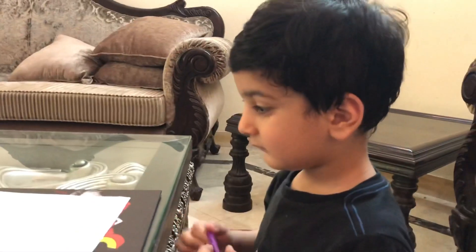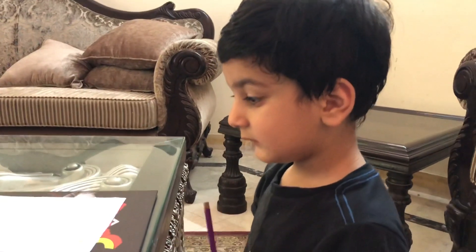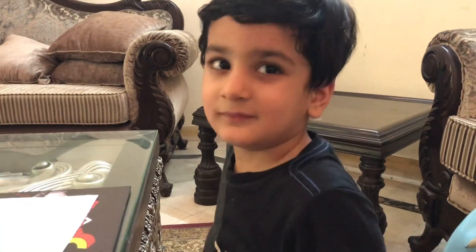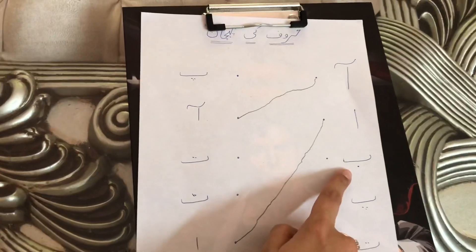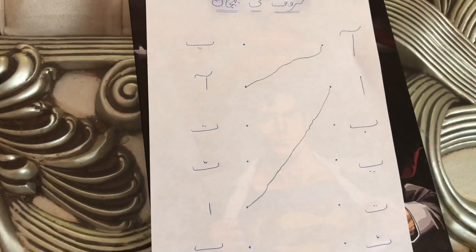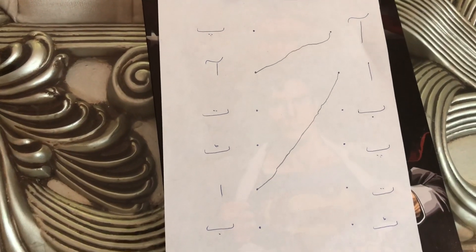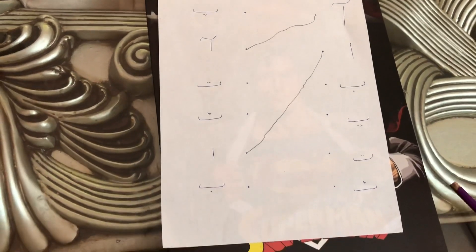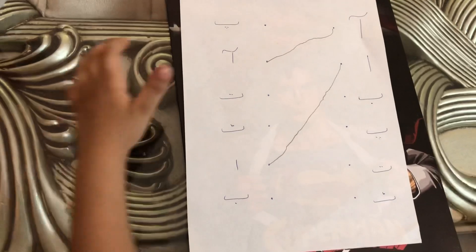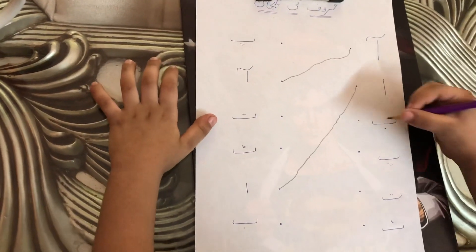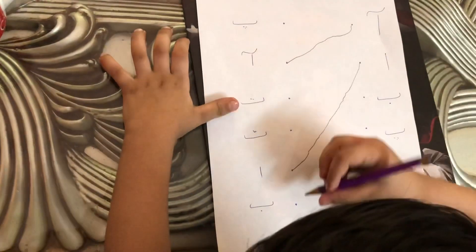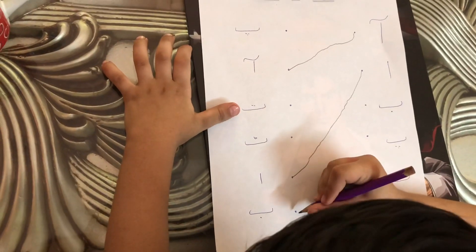Now tell me, Bilal — Alif for Aam. Tell me what is the color from the Alif? B! Where is another Bay? This one.